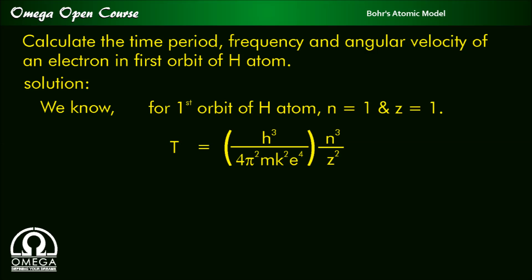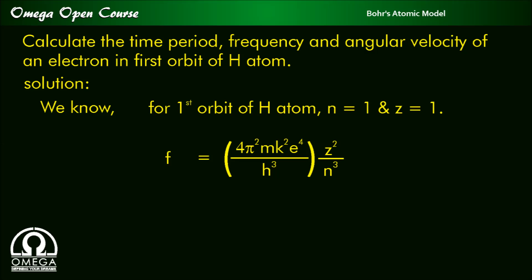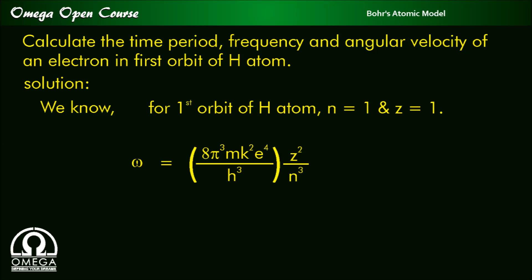Time period t is equal to (h³ / 4π²mk²e⁴) × (n³/z²), which equals t₀ × n³/z², which equals t₀. On calculation, this is 1.5 × 10⁻¹⁶ seconds. Frequency f equals (4π²mk²e⁴ / h³) × (z²/n³), which equals f₀, and its value is 6.6 × 10¹⁵ Hz. Angular velocity ω equals (8π³mk²e⁴ / h³) × (z²/n³), which equals ω₀, giving 4.1 × 10¹⁶ radian per second.